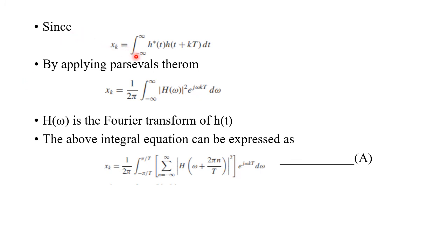Since x(k) = Σ(−∞ to +∞) h*(t)·h(t + kT), by applying Parseval's theorem we can write x(k) = (1/2π) ∫(−∞ to +∞) |H(ω)|²·e^(jωkT) dω. This can be expressed as x(k) = (1/2π) ∫(−π/T to +π/T) Σ(n=−∞ to +∞) |H(ω + 2πn/T)|²·e^(jωkT) dω. Note this as equation A.